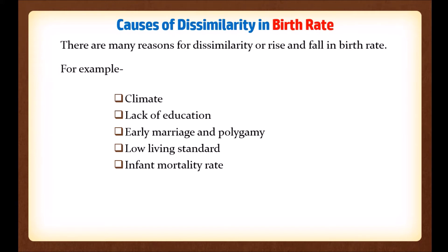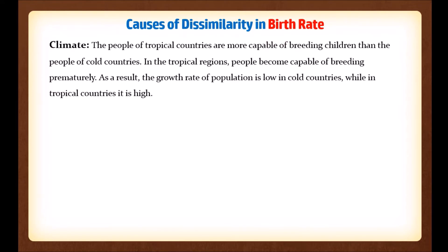The first cause is climate. The people of tropical countries are more capable of breeding children than the people of cold countries. In tropical regions, people become capable of breeding prematurely — that means people are capable of giving birth to children from an earlier age. As a result, the growth rate of population is low in cold countries while it is high in tropical countries.